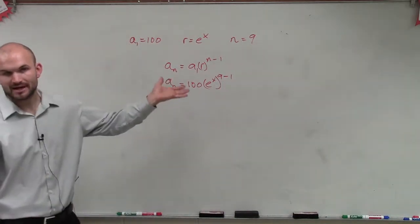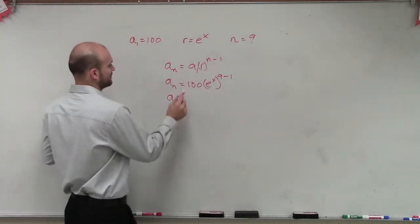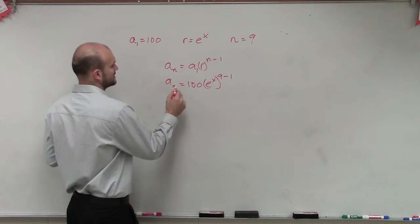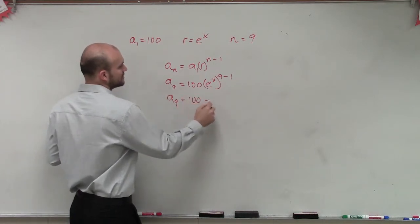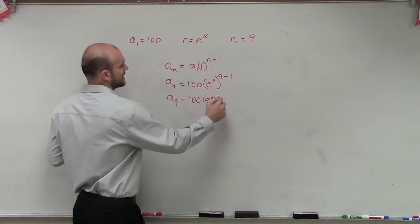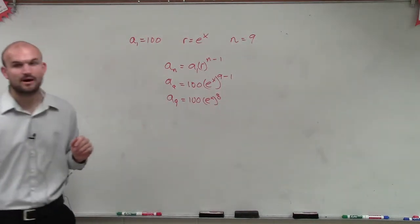We obviously know 9 minus 1 is just 8. So we're trying to figure out a_9. a_9 equals 100 times e to the x, raised to the eighth power.